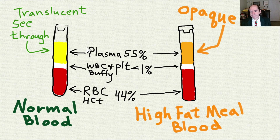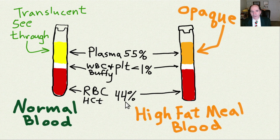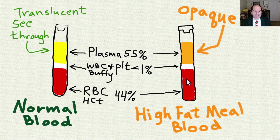Here's a blood draw. We can see that the blood has been centrifuged and the red blood cells sediment to the bottom — that tells you the hematocrit, about 44%. The white blood cells are in the center, the buffy coat, with plasma above, translucent. This is normal blood.